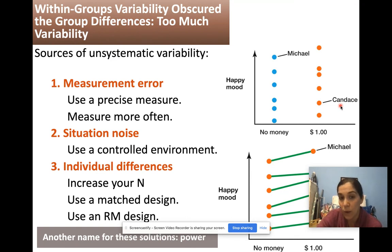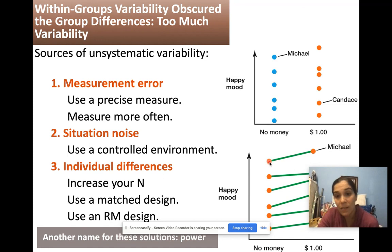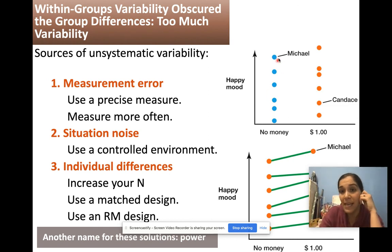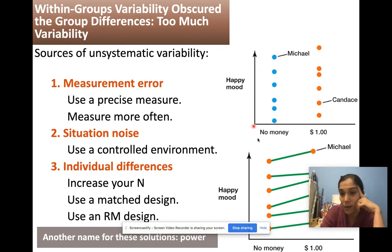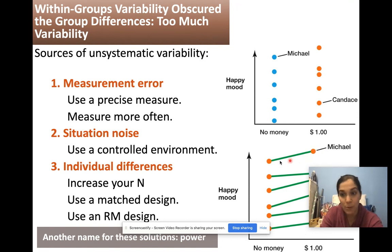One way to solve the within-group variability problem is to use a repeated-measures design, where you match by giving the same group no money and then a dollar, seeing if there's a difference within each person. The naturally happy person Michael increasing is because he increased from his own baseline. In a between-subjects design you might not find a difference because scores differ across the full length of the scale. In a repeated-measures design, the pretest is controlled for — you're calculating post-test minus pretest — which controls for individual differences.